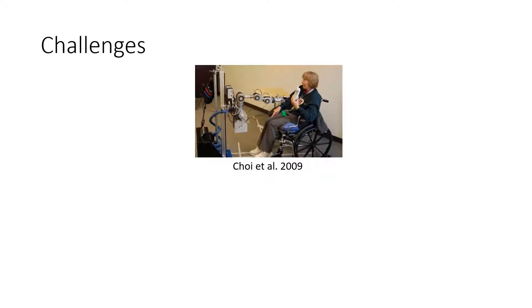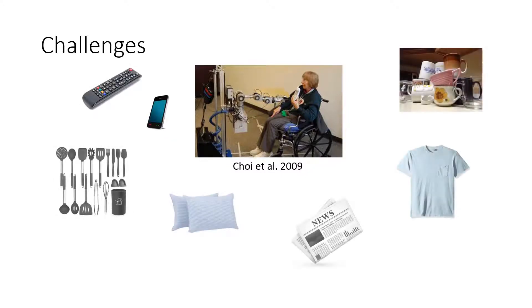For example, Troy et al. conducted a study with ALS patients to identify a list of objects that are needed most on a daily basis to inform the design of the assistant robot. The list includes over 40 objects, from remote control, cell phones, utensils, to pillows, newspapers, and t-shirts.